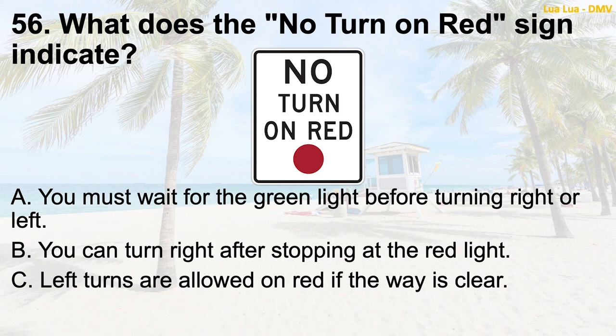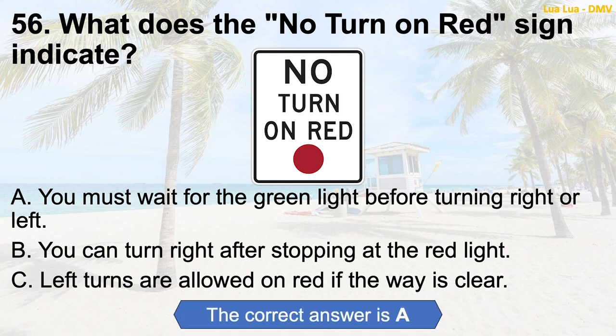Question 56: What does the 'no turn on red' sign indicate? A. You must wait for the green light before turning right or left. B. You can turn right after stopping at the red light. C. Left turns are allowed on red if the way is clear. The correct answer is A: You must wait for the green light before turning right or left.